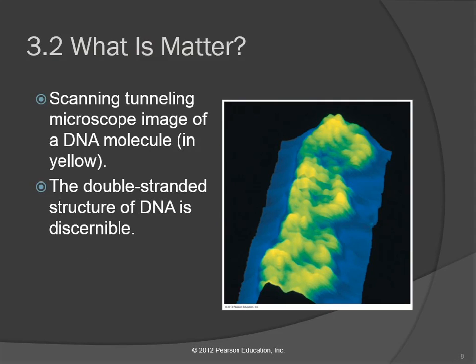This is a scanning tunneling microscope image of a DNA molecule — the yellow is the DNA molecule. What do you know about the shape of a DNA molecule? Double helix, right? It's got two strands, and they form like a ladder that twists around on itself. Can you see that double helix in there? We can actually get images of DNA and see that double-stranded structure. It's really cool.